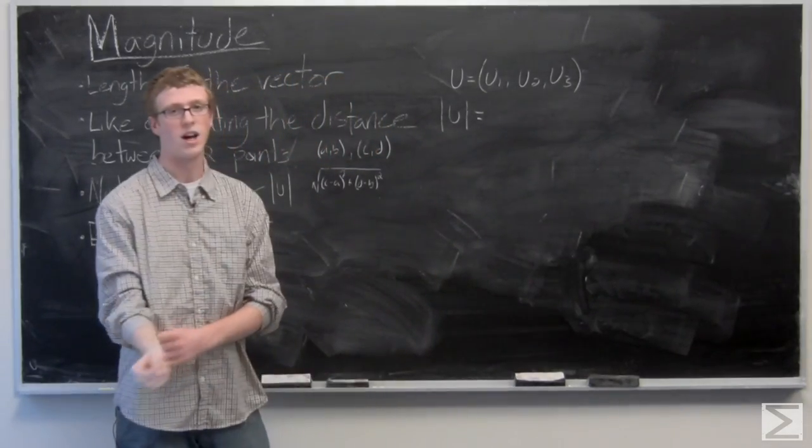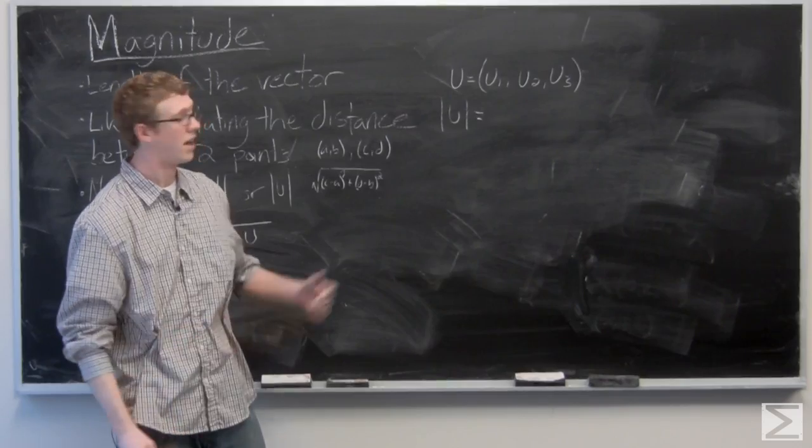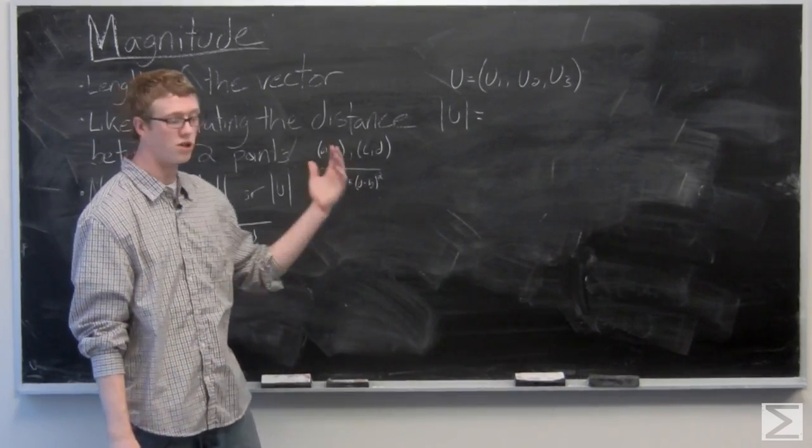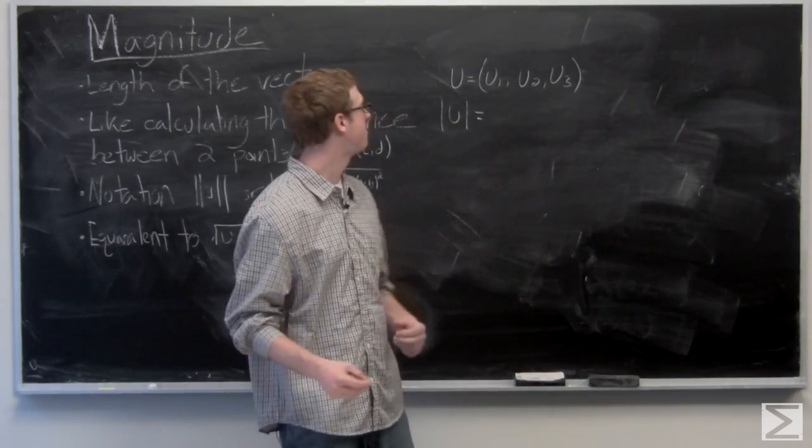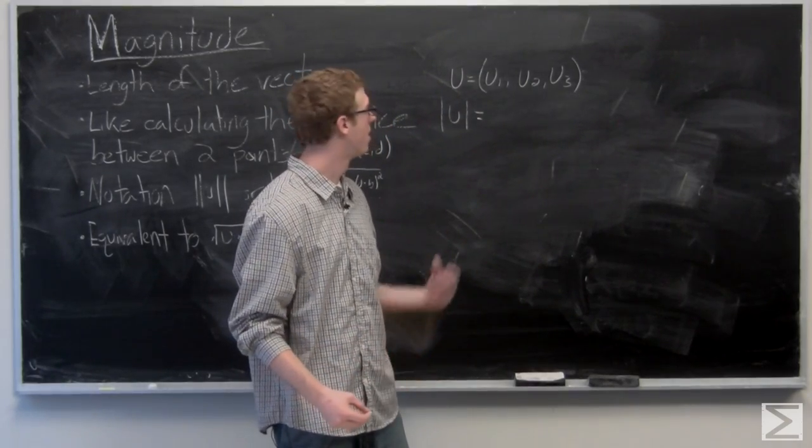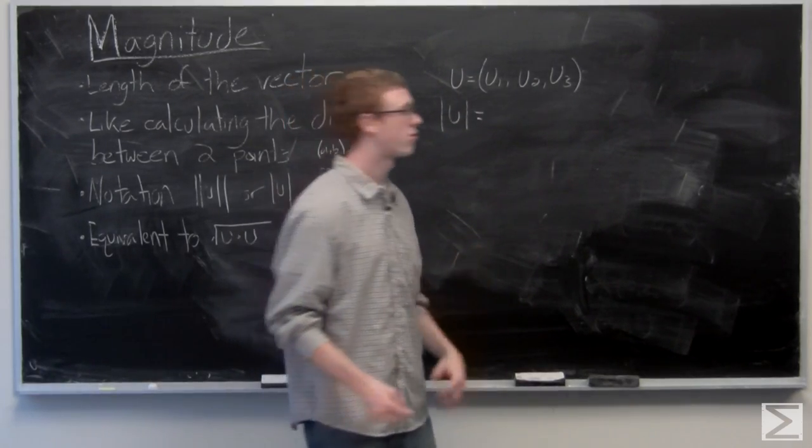Similarly the magnitude of a vector. This is in three space, u1, u2, u3. It's going to just be the square root of u1 squared, plus u2 squared, plus u3 squared.